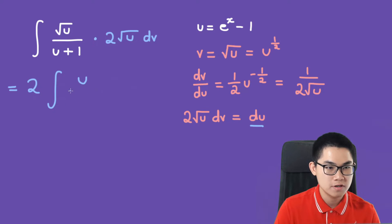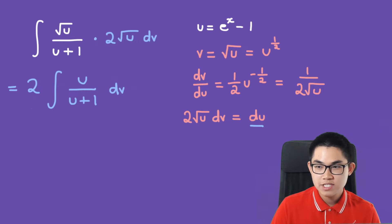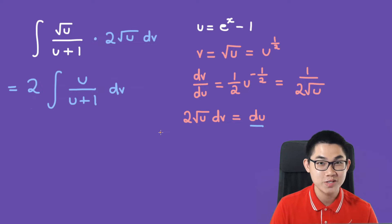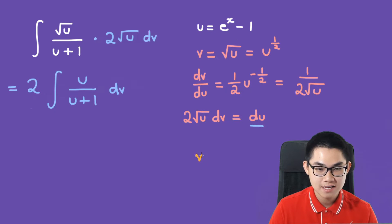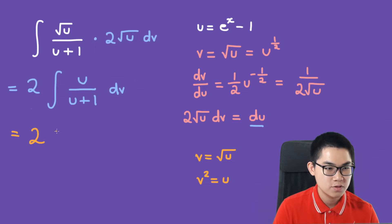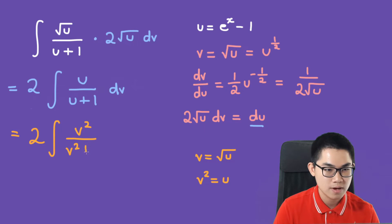Multiplying the square roots gives u over u plus 1 dv. Now we change u into v: since v equals the square root of u, it follows that v squared equals u. So the integral becomes 2 times v squared divided by v squared plus 1 dv.